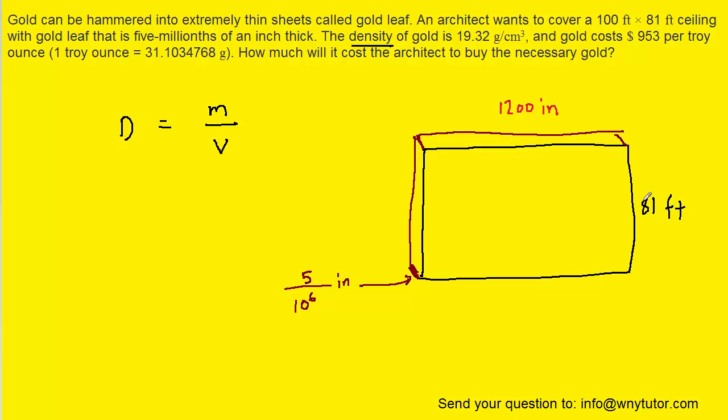Similarly, we can convert the 81 feet into inches by multiplying it by 12. When we do that, we get 972 inches. Now, the units of the measurements of the box are all in inches. We can now calculate the volume of this box.